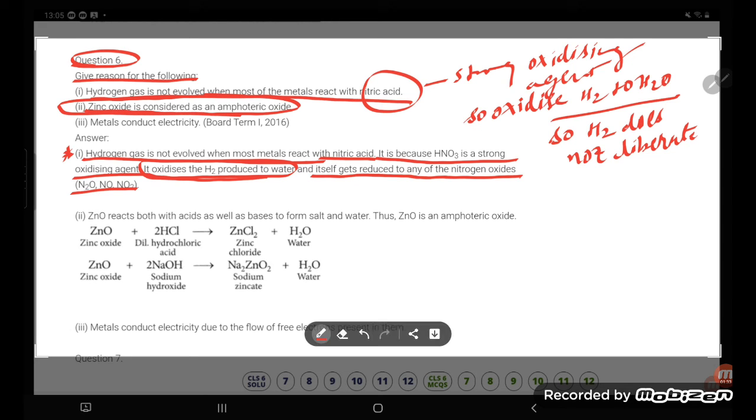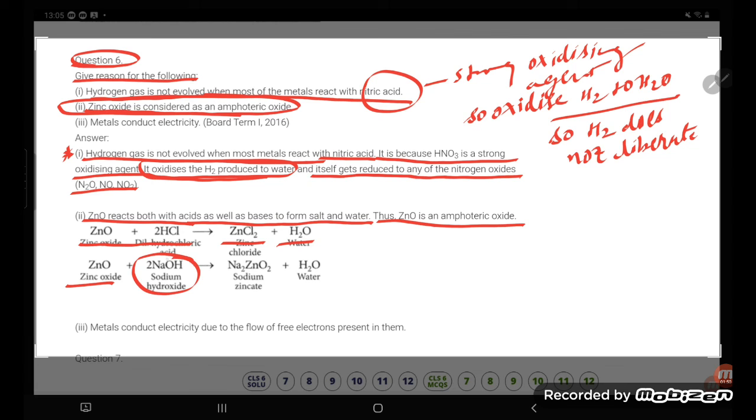Zinc oxide is considered as amphoteric because it reacts with both acid and base. ZnO reacts with acid as well as base to form salt and water. Thus ZnO is amphoteric. So zinc oxide plus 2HCl gives ZnCl2 plus H2O. ZnO plus 2NaOH gives sodium zincate.